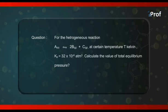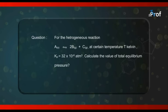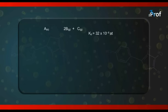Let us solve this question. The solution requires, first of all, the equation of the reaction: A solid giving us 2B gas and C gas. The value of Kp is given to us as Kp equal to 32 into 10 to the power minus 6 atmosphere to the power 3.